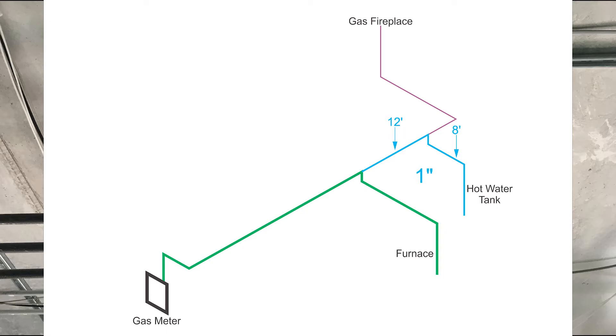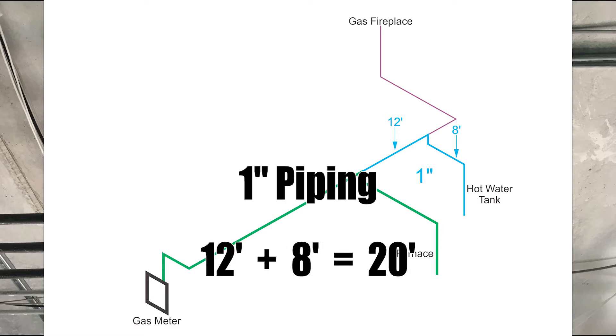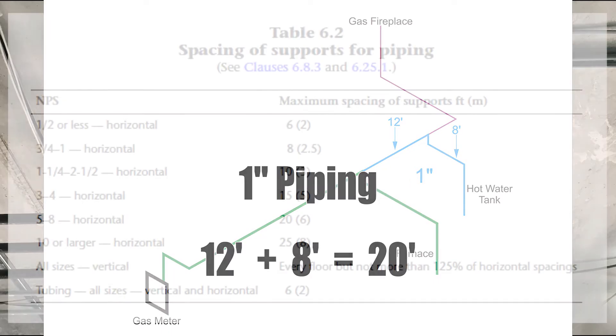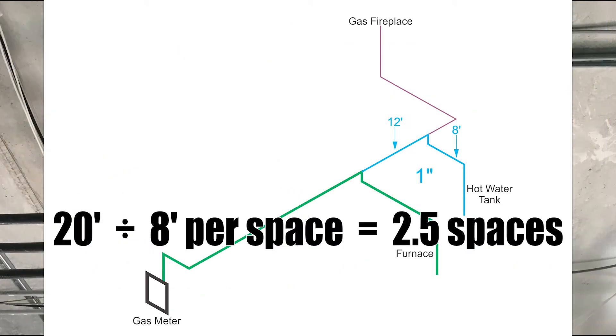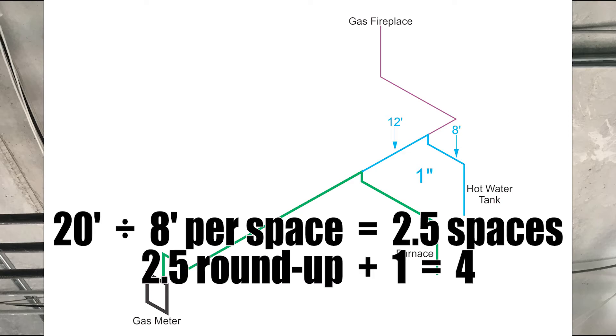Let's move on to the one inch piping going down to the hot water heater. I've got 12 feet going across here and then a further eight feet going to the water heater. Once again, vertical piping is not factored in. That equals 20 feet. The maximum spacing for one inch black iron pipe is eight feet. 20 feet divided by eight foot spacing gives me 2.5 spaces. Round up and add one: 2.5 rounded up is three plus one equals four hangers.